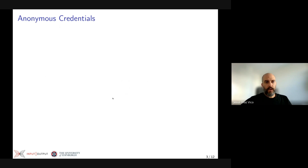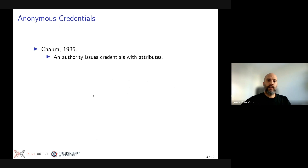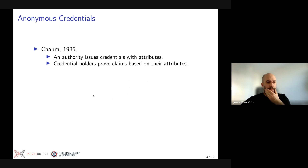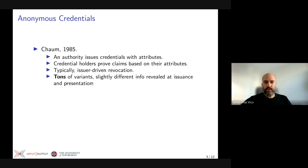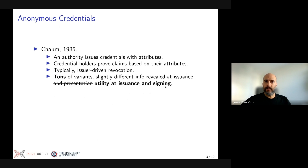Similarly, anonymous credentials were proposed by David Chaum in 1985. We also have an authority who issues credentials, and these credentials typically have attributes like age, nationality, or anything like that. Equipped with these credentials, credential holders can prove claims based on these attributes. Typically anonymous credentials have issuer-driven revocation, and there are tons of variants with slightly different information being revealed at issuance or presentation time — what I refer to as utility at issuance or signing.